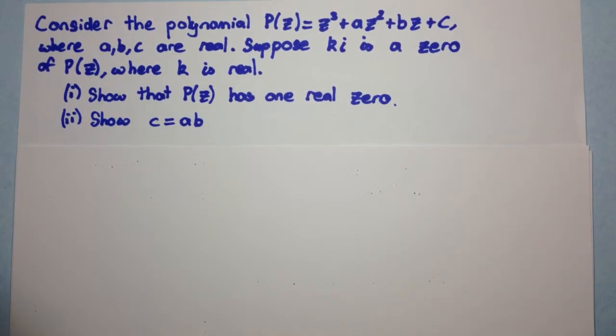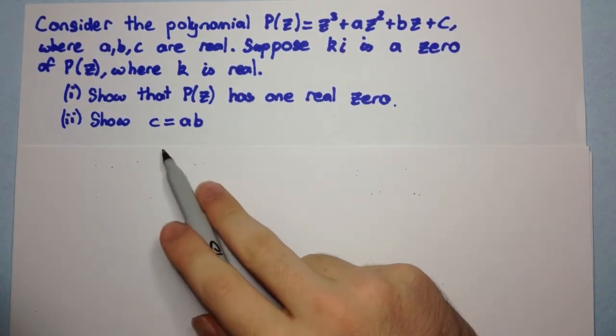consider the polynomial P of Z equal to Z cubed plus AZ squared plus BZ plus C, where A, B and C are all real. Suppose that Ki is a zero of P of Z, where K is real. Now, we need to show that P of Z has one real zero, and we need to show that C is equal to AB.